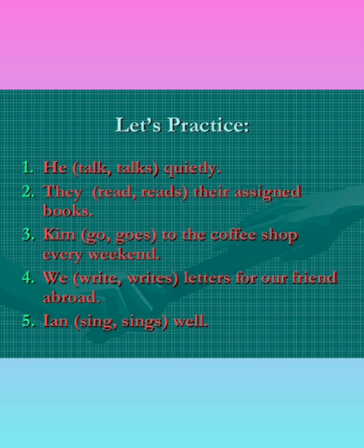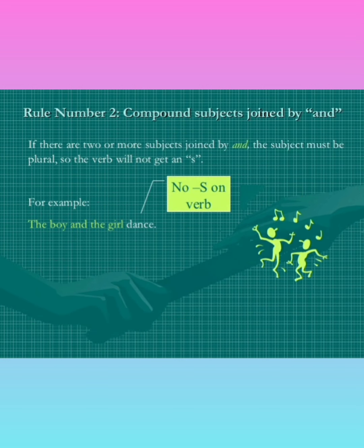Don't confuse 'Ian' as 'I am' — Ian is actually a name of one person. Now rule number two: compound subjects joined by 'and.' Compound means so many subjects. If there are two or more subjects joined by 'and,' the subject must be plural and the verb will not get an S. Like 'the boy and girl' — so many persons — this becomes a compound subject, that's why 'dance' with no S on the verb. If the compound subjects are joined by 'and,' they require a plural verb, like 'the boy and the girl dance.'